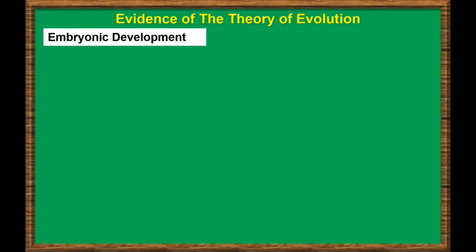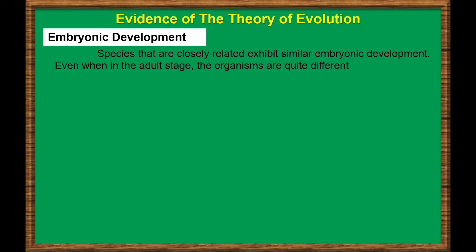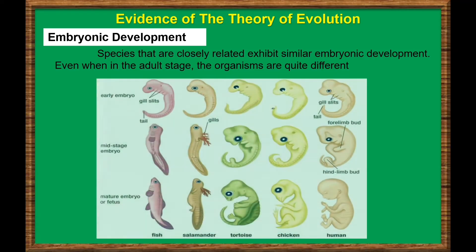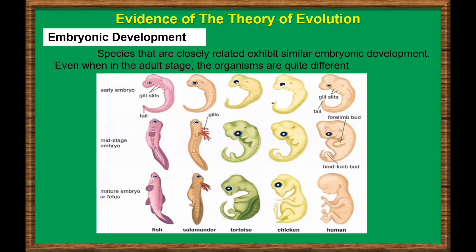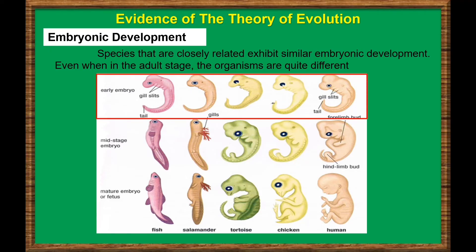Embryonic development: species that are closely related exhibit similar embryonic development, even when in the adult stage the organisms are quite different. For example, the embryos of fish, salamander, tortoise, chicken, and human are similar during the first stage of their embryonic development, and have several homologous structures that are not present when the organisms are adults.